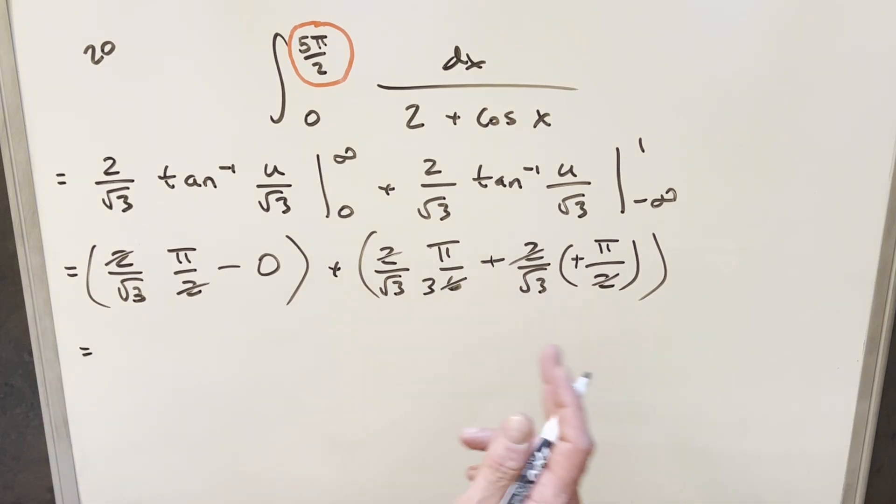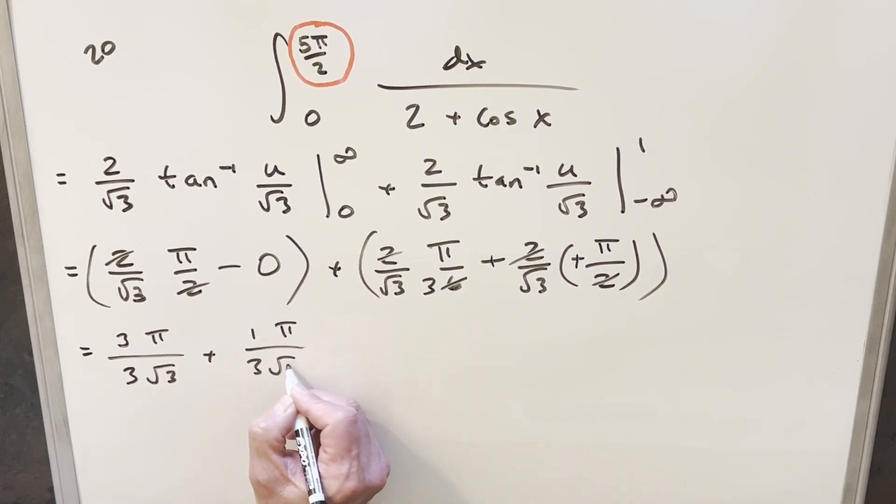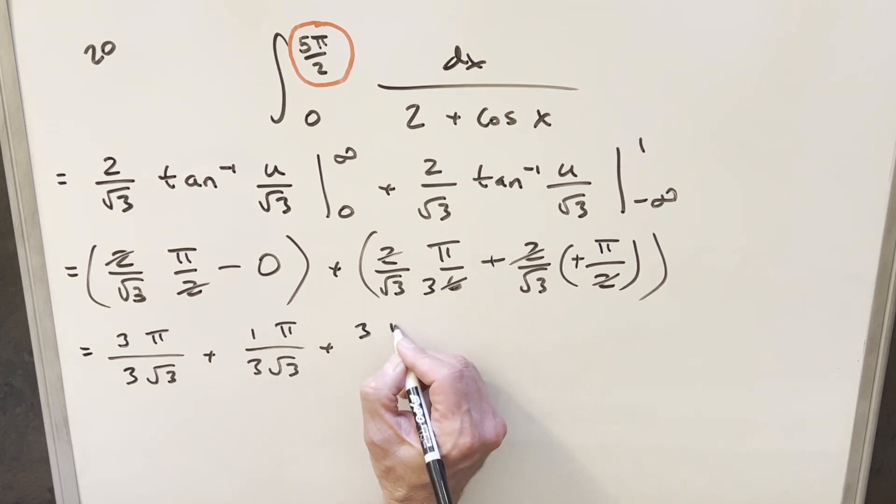But now we just need to add everything together, but I want to get a common denominator of 3 square root of 3. So what I'll do is I'll write this first piece as 3π over 3 square root of 3. Then for this next one, this is just going to be 1π over 3 square root of 3. And this last one is going to be just like this one, 3π over 3 square root of 3.